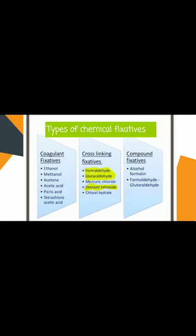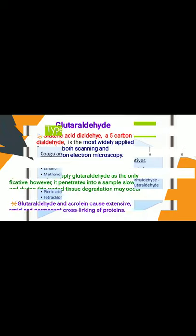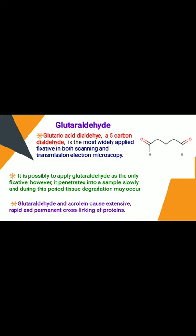There are three types of chemical fixatives. First, coagulant fixatives, which include ethanol, methanol, acetone, acetic acid, picric acid, and trichloroacetic acid. Second, cross-linking fixatives, which include formaldehyde, glutaraldehyde, mercury chloride, osmium tetroxide, and chloral hydrate. Third, compound fixatives, which involve mixtures such as two-alcohol formalin and formaldehyde-glutaraldehyde combinations.